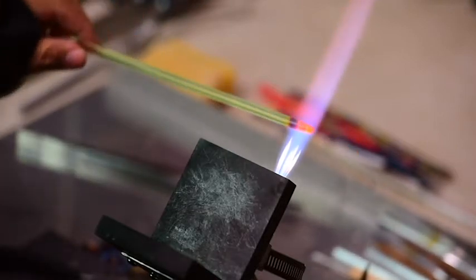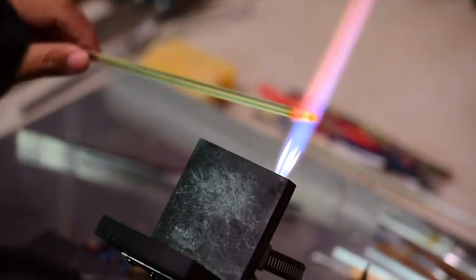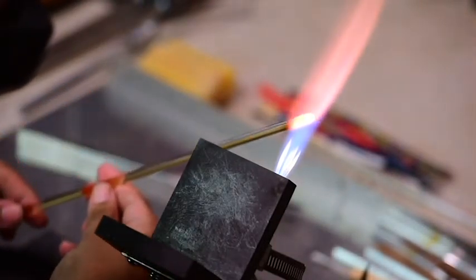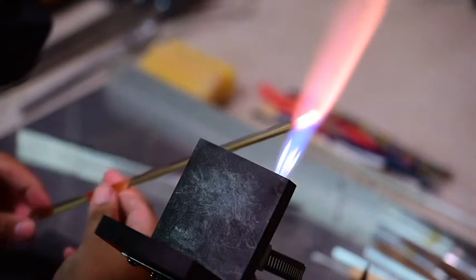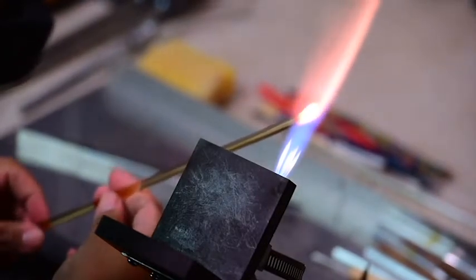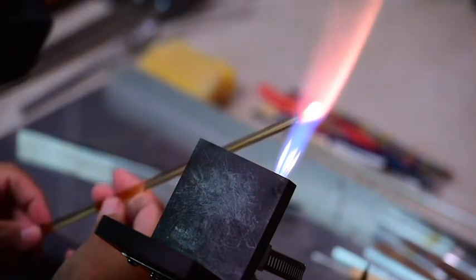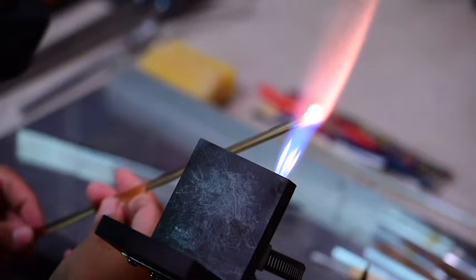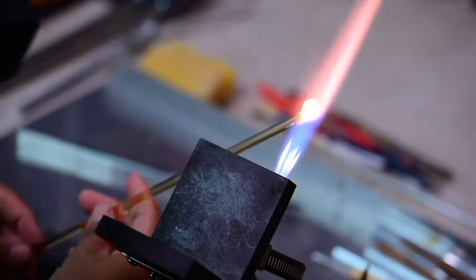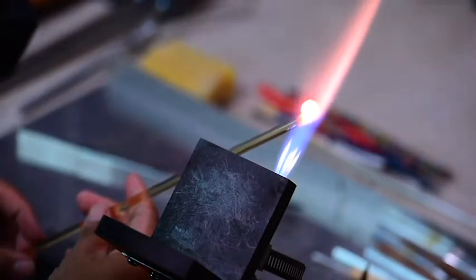I'm still in the process of tweaking my studio. I got a mini torch recently that's been helpful. It just allows you to get in there and do more detailed, precise work. This torch, this Bethlehem Bravo torch that I'm working with, gets a pretty precise flame. But it's nice to be able to move the torch around with your hand with the mini torch.